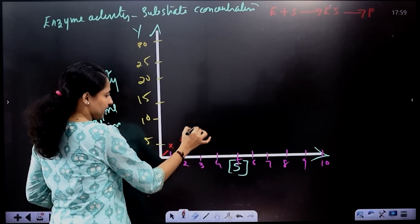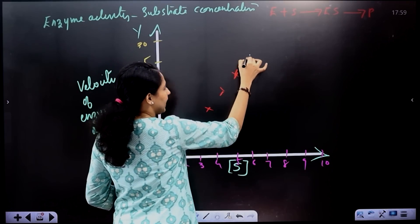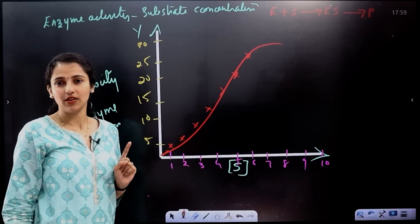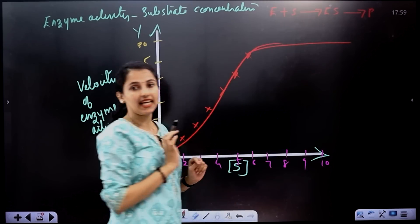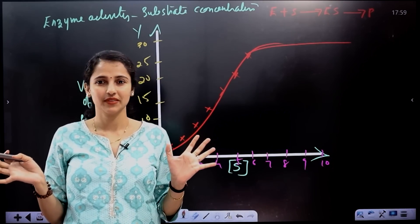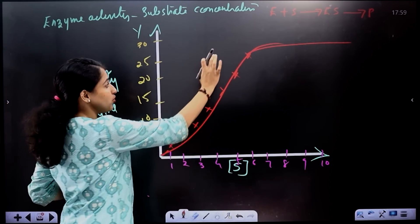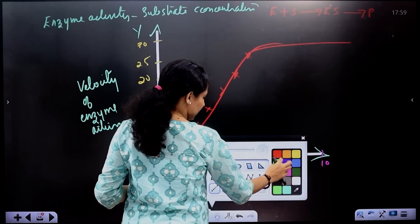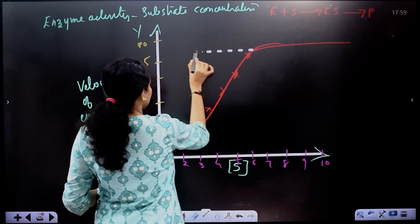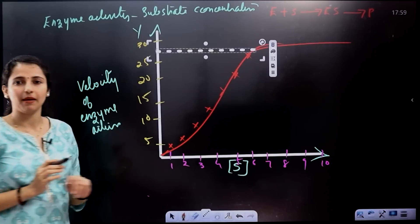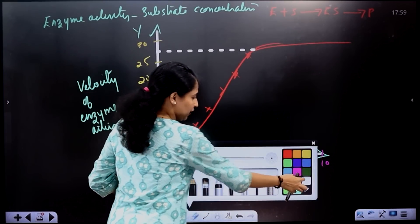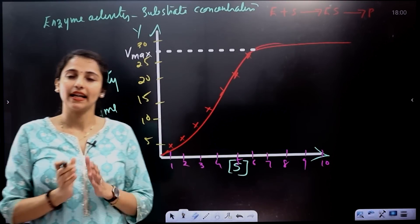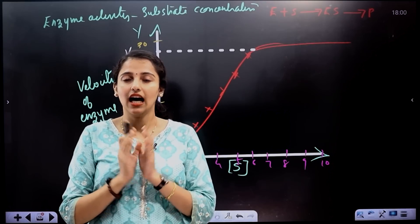As substrate concentration increases, the enzyme activity will come up — it rises. At a certain point, we reach the maximum enzyme activity. That point is called VMAX.